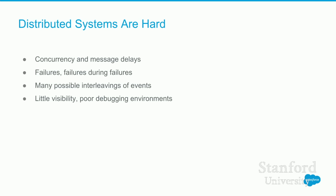Does anyone disagree that distributed systems are hard? There are a number of reasons why they're difficult for humans to think about. There's concurrency — machines are operating in parallel, sending messages to each other. And by the time you receive a message, it's already stale — the content it's reflecting happened a while ago due to network latency. You have to deal with failures, but also with failures that happen during failures. You can't just put a try-catch block and be done with it.